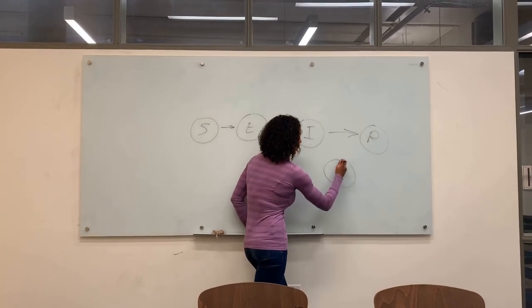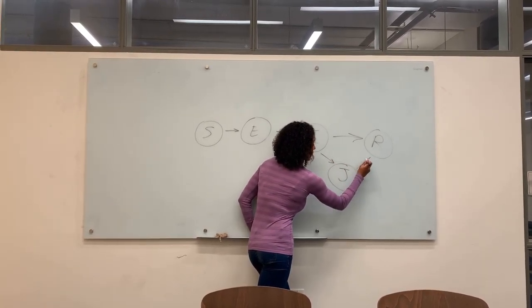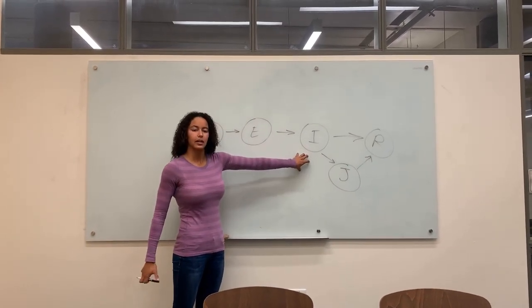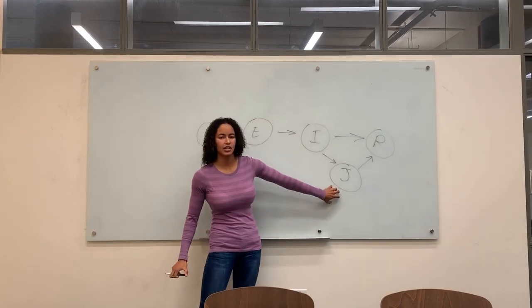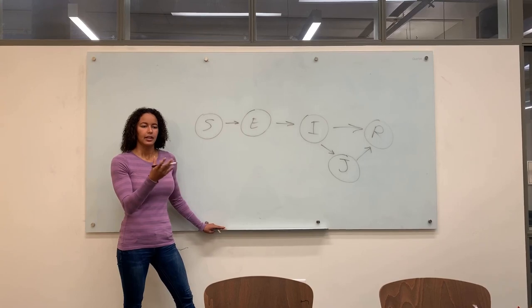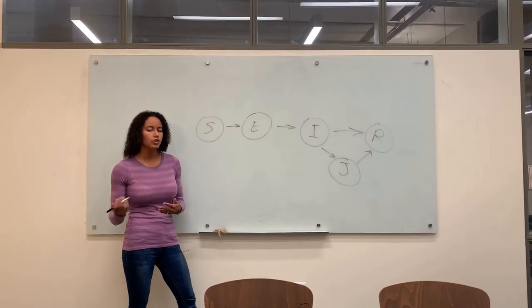Next, we add a parameter, J. J stands for people that have been isolated after they show symptoms of the disease. Isolation is where a person with the disease is separated from healthy individuals of the population, usually in a hospital.